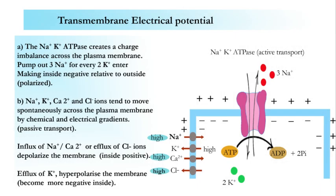Ion channels are gated. Sodium, potassium, calcium, and chlorine ions move across the plasma membrane in response to various stimuli. These ion channels are gated — they may be open or closed depending on whether the receptor has been activated by a signal or by a change in the transmembrane electrical potential.